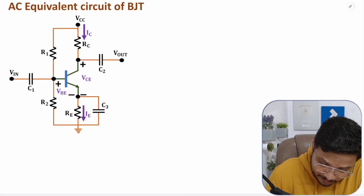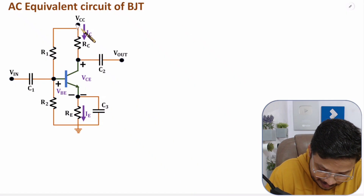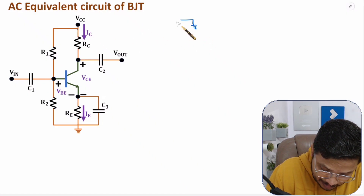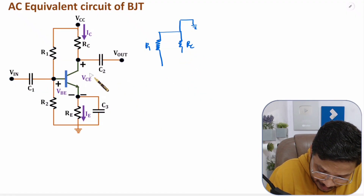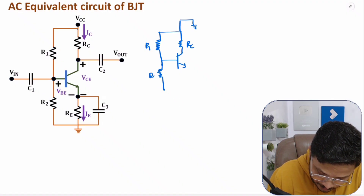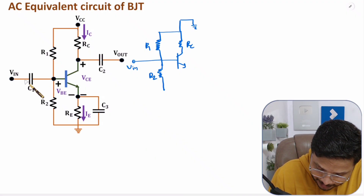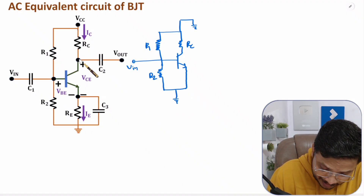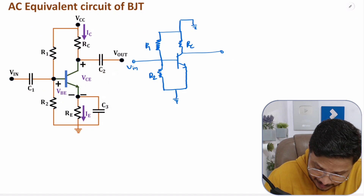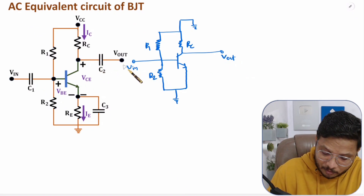When we short circuit VCC, we connect that terminal to ground. With this, we have R1 and RC resistances, and the BJT. R2 is also in the circuit. The input is connected through C1, which is now shorted. RE is shorted by C3, so RE is no longer needed. The output is taken from the collector through C2, which is also shorted. That is the basic AC equivalent circuit we get.